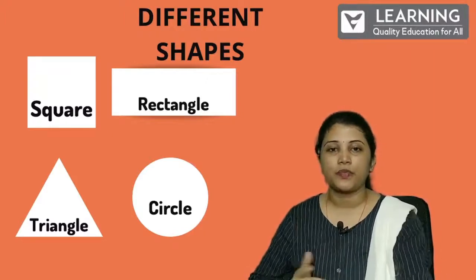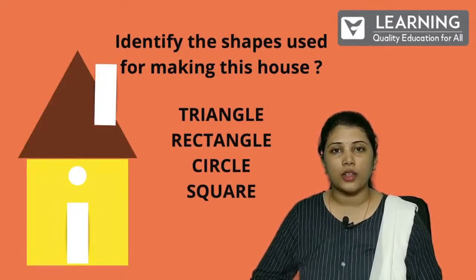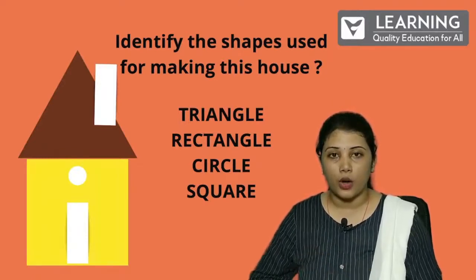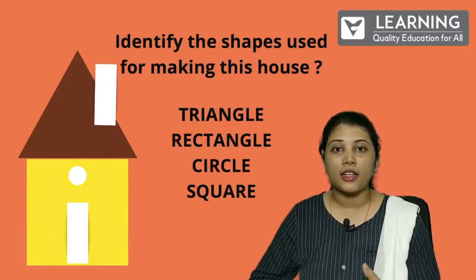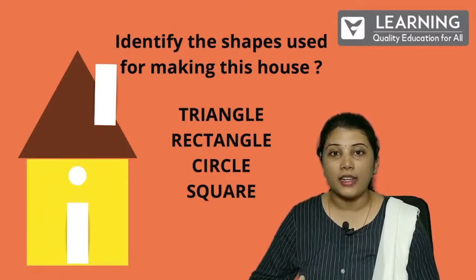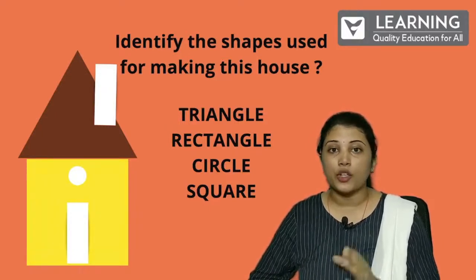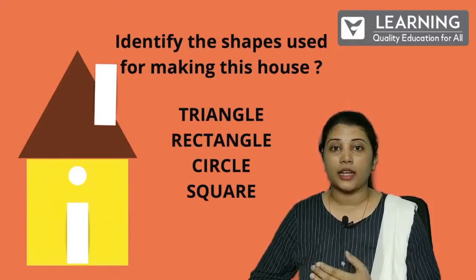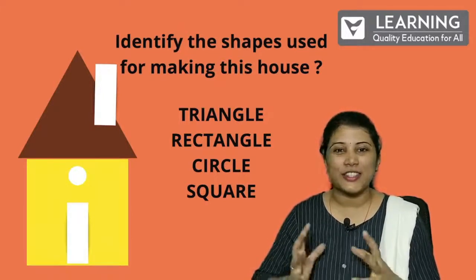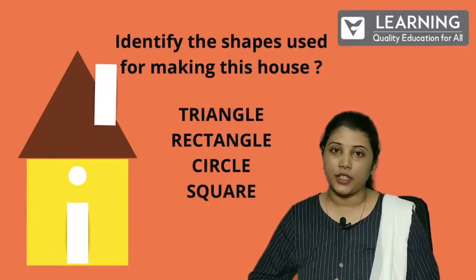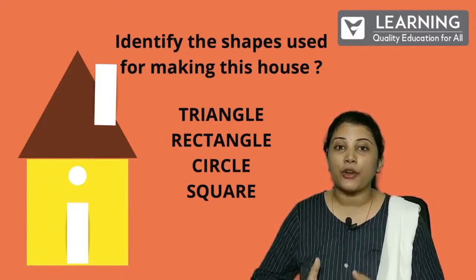Now let's see how we can make a house by adding all these shapes together: triangle, rectangle, square, and circle. You can also form these kinds of houses with all four shapes. Draw it in your copy and colour it — you will enjoy colouring it. You can add different colours and enjoy making different shapes.